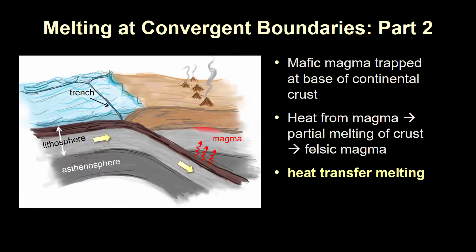As this mafic magma rises through the plate, some of it may get trapped at the base of the continental crust, heating it up and causing it to undergo partial melting to form a felsic magma by a process known as heat transfer melting.